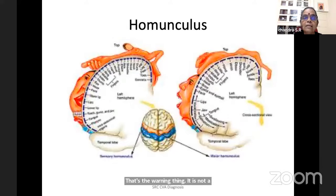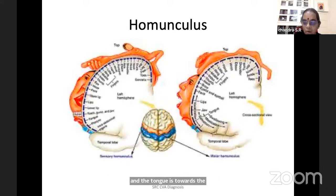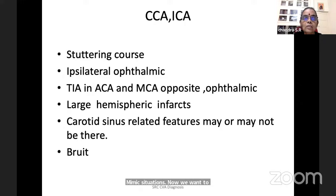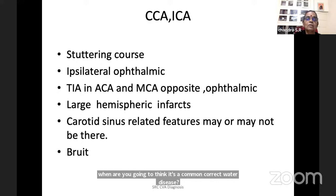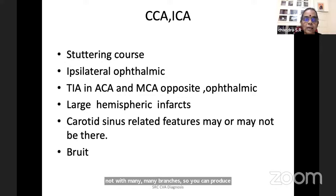Localization depends on the homunculus. The superior lateral surface contains the hand and head, while the trunk is towards the interhemispheric region, and in the interhemispheric region you have the legs. That determines the territory. When are you going to think it is common carotid artery disease? A classical stuttering hemiplegia — the common carotid artery has many branches, so a thrombus can send small emboli into multiple vessels presenting as stuttering hemiplegia or step-like progression.